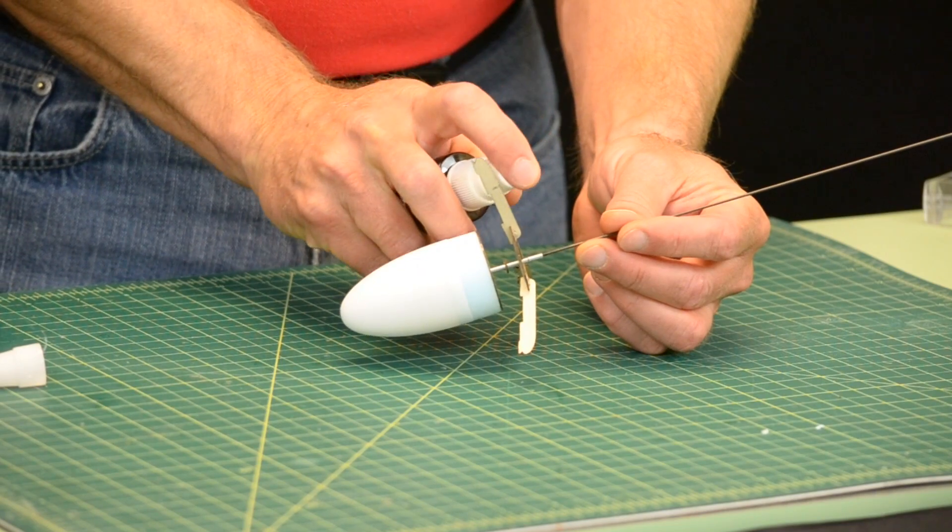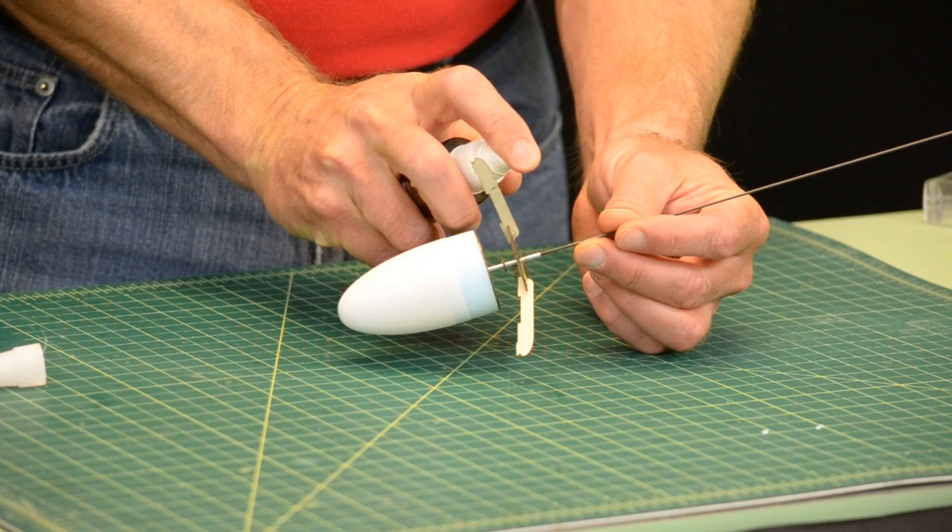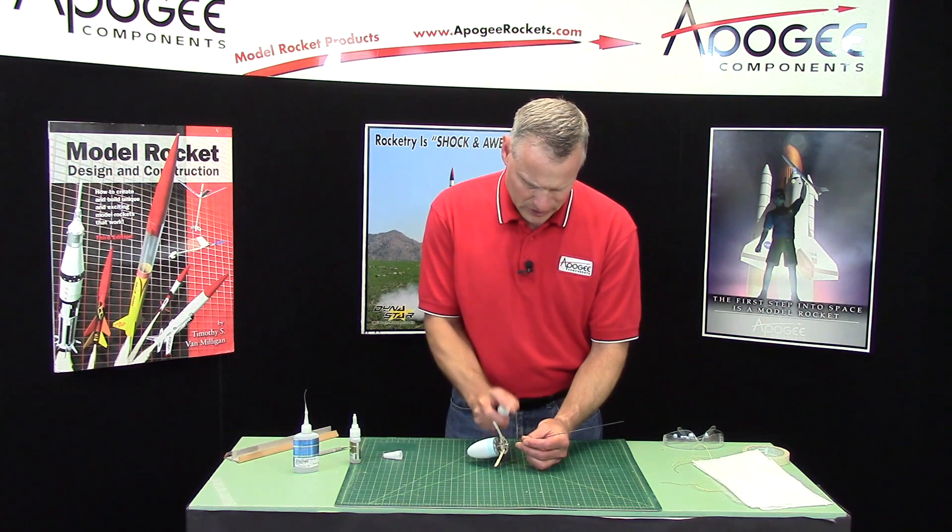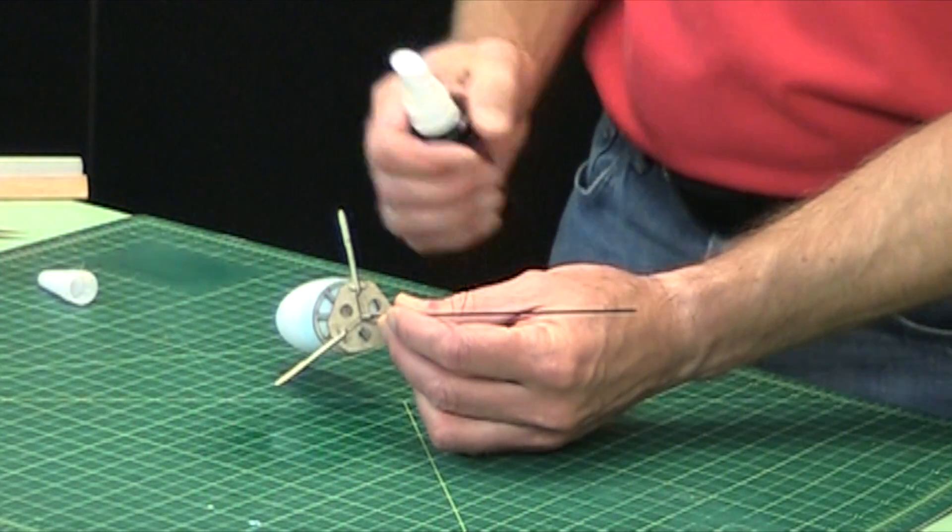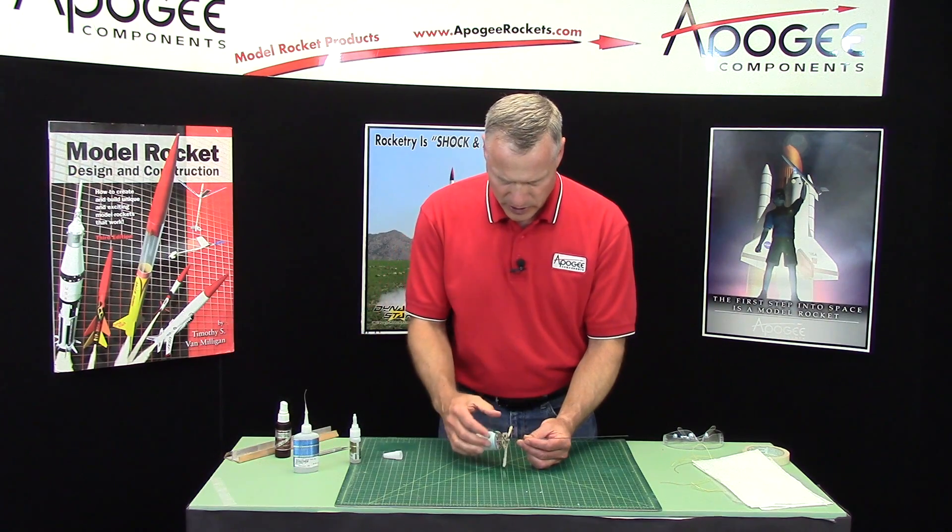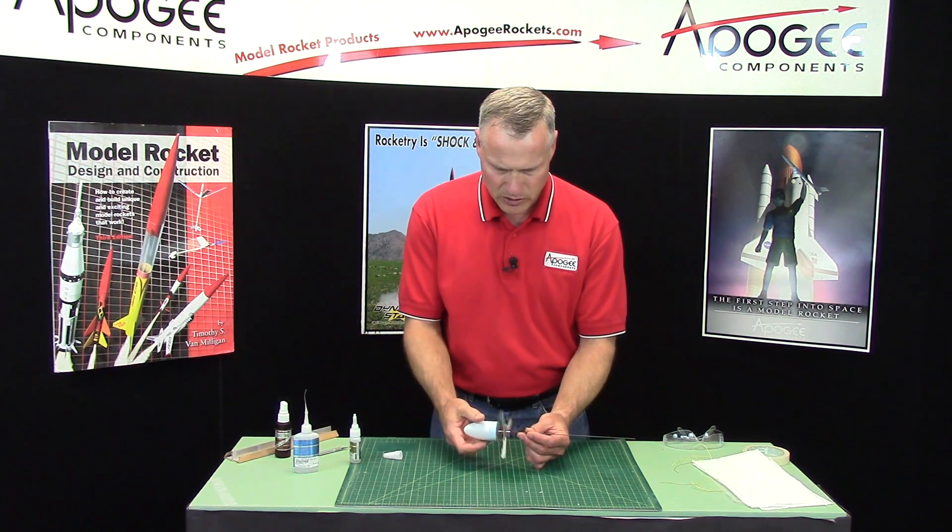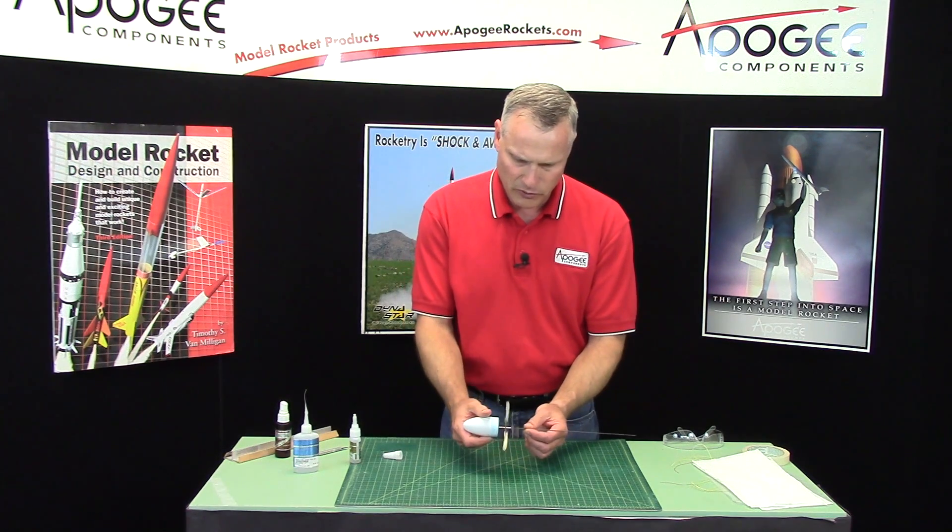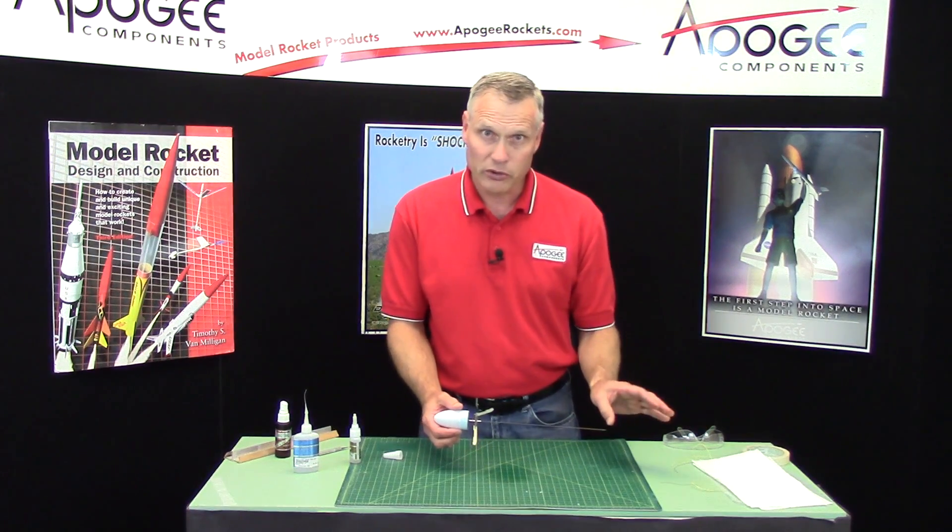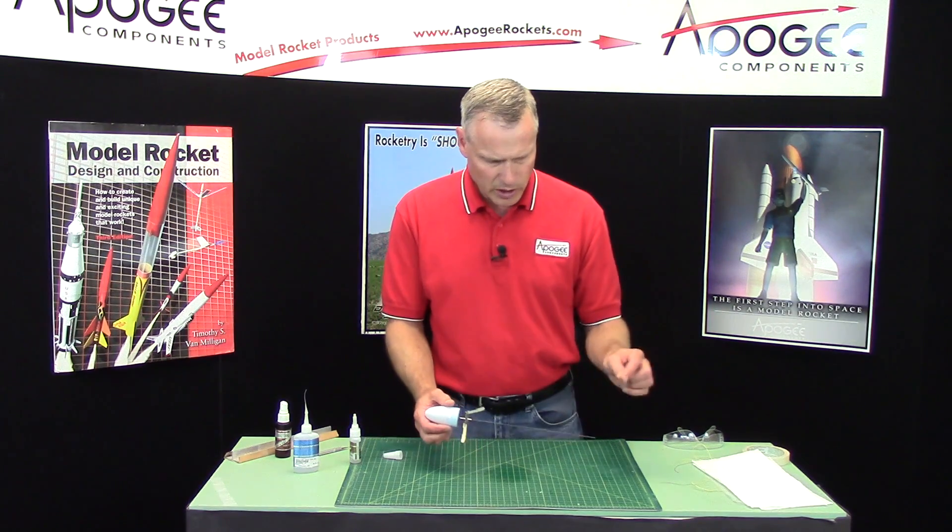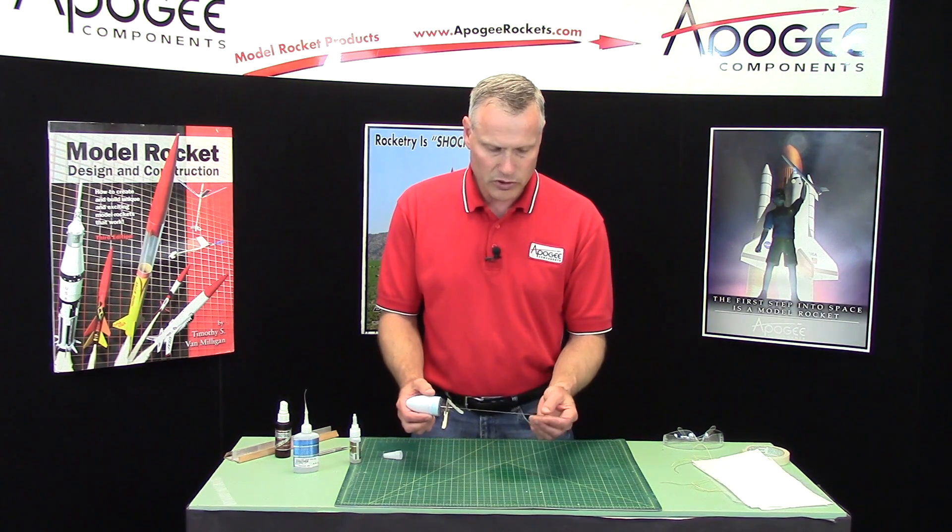There we go, and that will lock it in position. Now it free rotates. Our next step is to install the shock cord onto the tube and then connect that to this graphite rod.